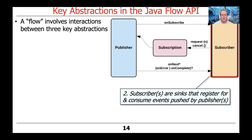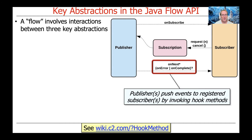Subscribers are sinks that register for and consume events that are pushed by publishers. Publishers publish and subscribers consume and receive the events. After a subscriber is subscribed to the publisher, the publisher can go ahead and publish events by invoking one or more of three hook methods: onNext, onError, and onComplete. A hook method is just a method that can be overridden and refined by some concrete class, like a concrete subscriber.